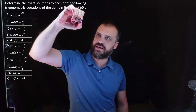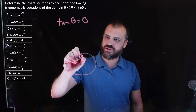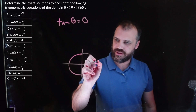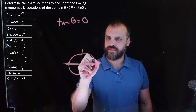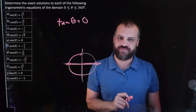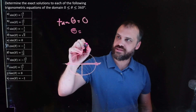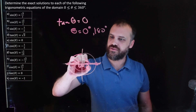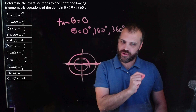Tan θ = 0. You should know about this and be able to spot the answers. Draw a circle. Tan θ equals zero here and here. Similar to the sine = 0 question, our answers are 0 degrees, 180 degrees, and also 360 degrees. Three answers. One more to go.